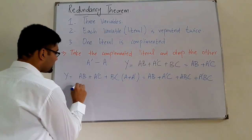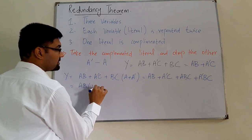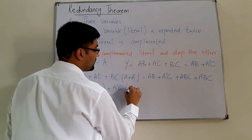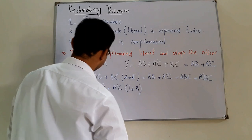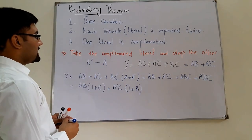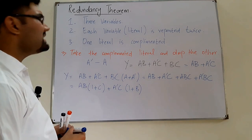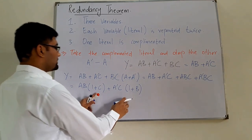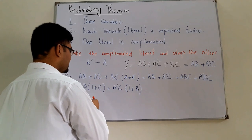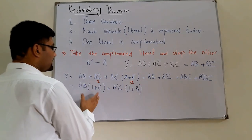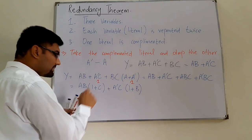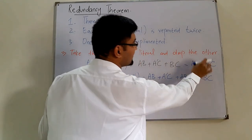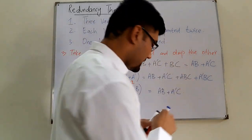Factoring: from ABC and AB we take AB common — AB(1 + C). From A'BC and A'C we take A'C common — A'C(1 + B). Since anything OR'd with 1 is 1, both expressions simplify to 1, giving AB·1 + A'C·1 = AB + A'C. This confirms the Redundancy Theorem.